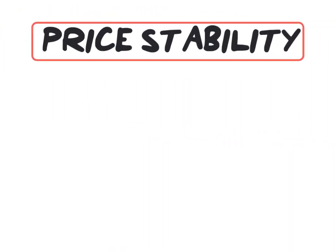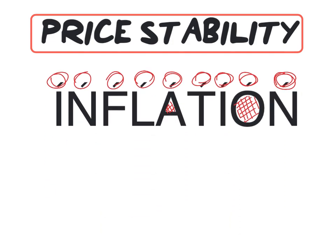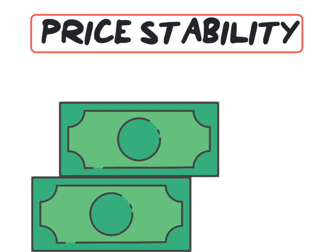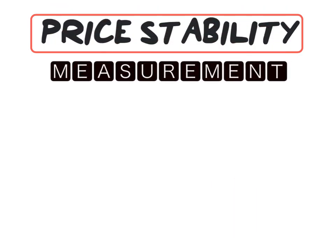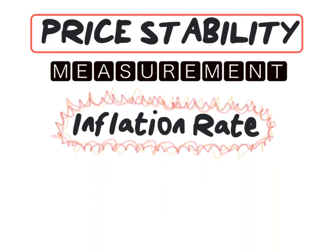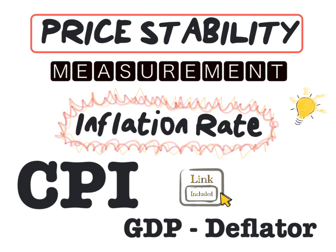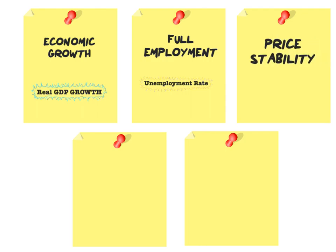The next objective: price stability. Price stability relates to the cost of living, also known as inflation. Inflation entails the increase in price levels in general. In order to protect the value of a currency, price stability is considered one of the most important macroeconomic objectives. In order to measure price stability, we will use the inflation rate, which can be calculated using the CPI or our GDP deflator. For a detailed explanation on the CPI and GDP deflator as measurements for the inflation rate, please be sure to watch the previous explainer video. Our third objective: price stability, measured by our inflation rate.